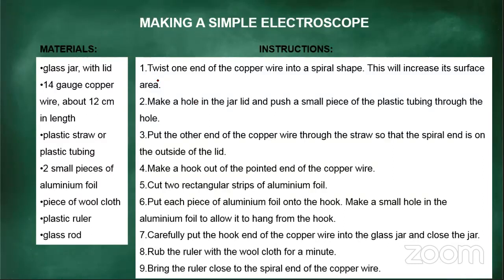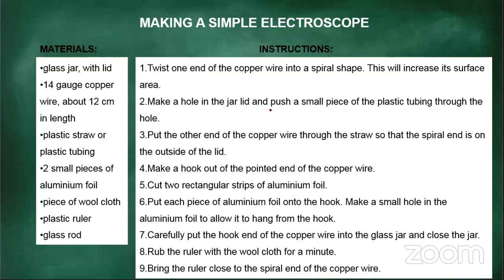Instructions: twist one end of the copper wire into a spiral shape to increase its surface area. Make a hole in the glass jar lid and push a small piece of plastic tubing through the hole. Put the other end of the copper wire through the straw so that the spiral end is on the outside of the lid. Make a hook out of the pointed end of the copper wire. Cut two rectangular strips of aluminum foil — small ones, as shown in the picture.